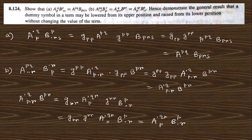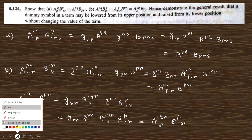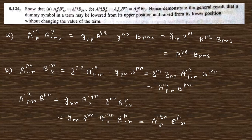Hence, demonstrate the general result that the dummy index in a tensor term in a lower position can be raised to the upper position without changing the value. As you can see from these two examples, if we change the upper and lower dummy index, there is no change in the value.